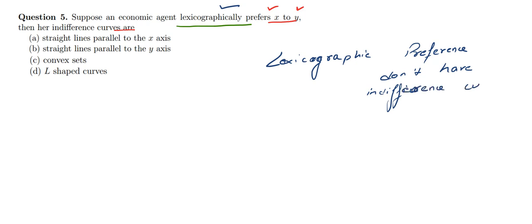You need to remember this rule—the strictest rule that lexicographic preferences don't have indifference curves. Basically, the set of points where the agent is indifferent will form a single term. We have the set of points at which the agent is indifferent.